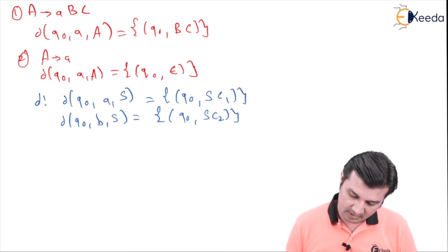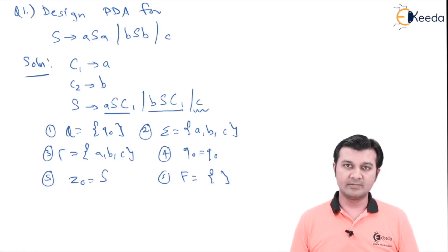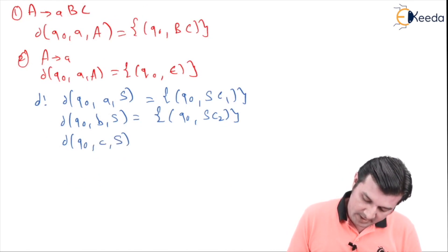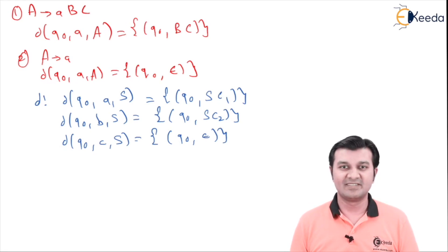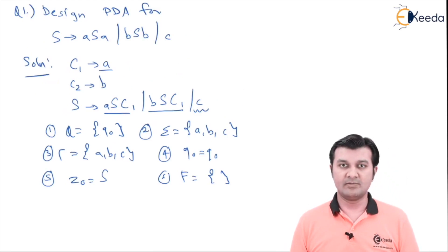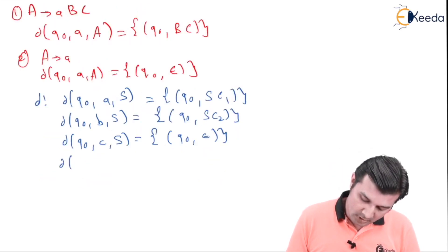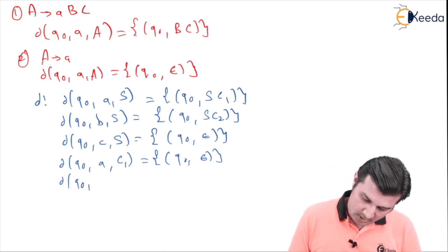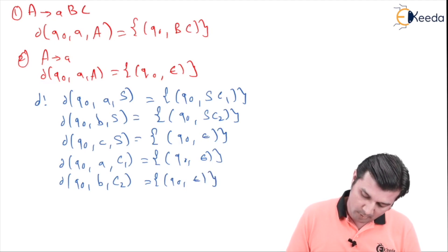Going ahead for the third production, which is simply this C, using rule 2 I say q0 on c when the stack top is S goes to q0 comma epsilon. Next one, for C1 gives a, this production I say using rule 2, q0 on a when the stack top is capital C1 goes to q0 comma epsilon by performing the pop operation. Lastly, q0 on b when the stack top is C2 again goes to q0, perform the pop operation, and here we stop.